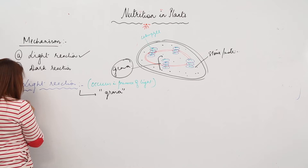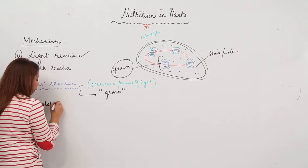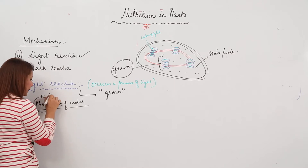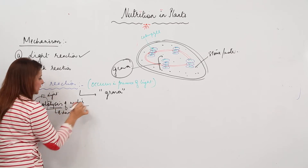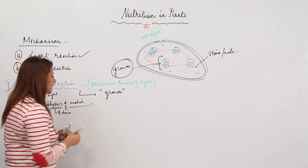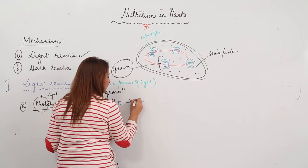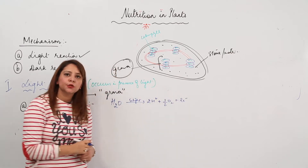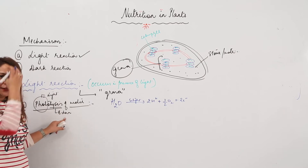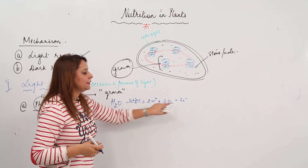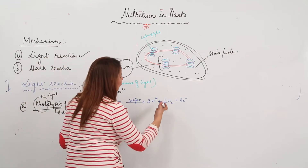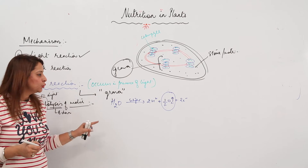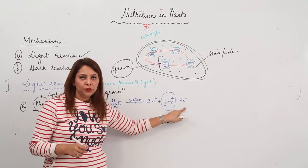The first thing involved in the light reaction is the photolysis of water. 'Photo' means light, 'lysis' means breakdown — obviously of water. So what happens here is that water, in the presence of sunlight, breaks up to form 2H+, half O2, and 2 electrons. This O2 will be exhaled out because the by-product of photosynthesis is O2. We are still left with 2H+ and 2 electrons.